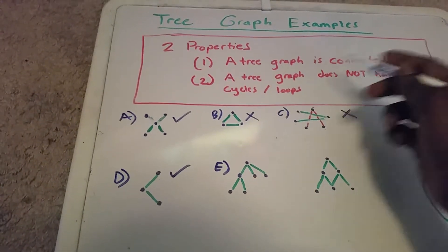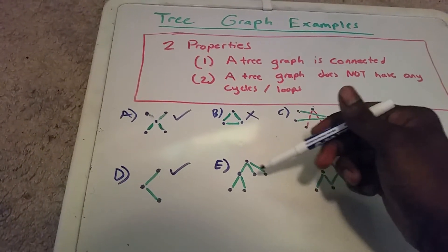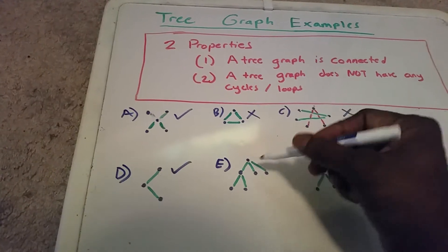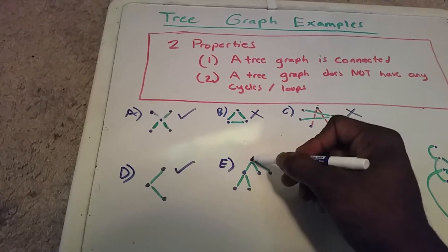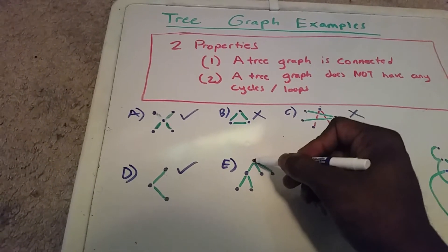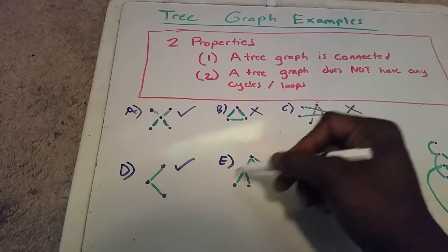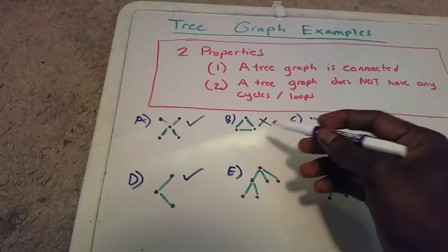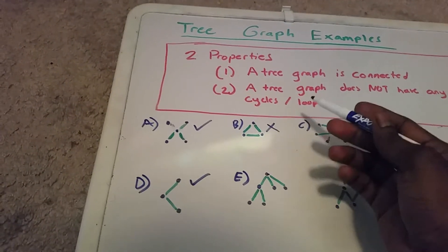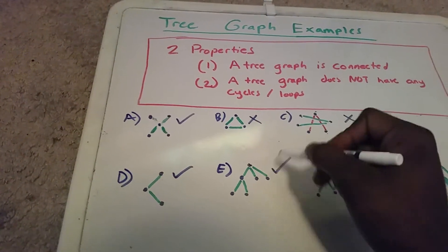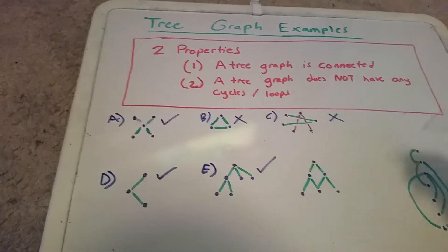We can see that all of the nodes are connected, because we can get from this node to any of the other ones, and there's no cycle. So this is a tree graph.